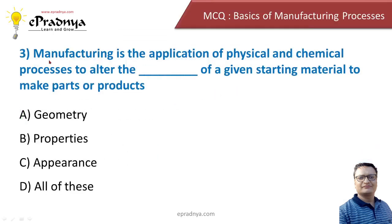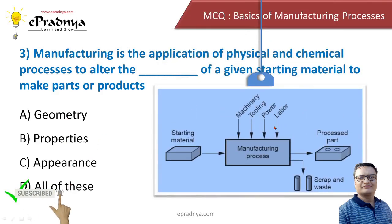Let us move to the third question. Manufacturing is the application of physical and chemical processes to alter the ___ of a given starting material to make parts or products. Options are: geometry, properties, appearance, and all of these. The correct answer is all of these. Manufacturing is the application of physical and chemical processes — using machinery, tooling, power, and labor — to convert a starting material into a processed part of some useful form.